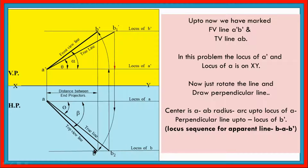First B to A — the arc. Then A to B-dash is the perpendicular line. For the true line it is reversed: B-dash to A — perpendicular line, then A to B — arc. That's it.